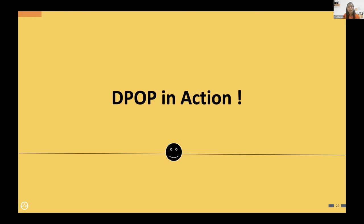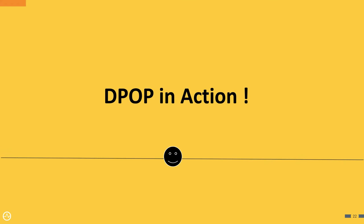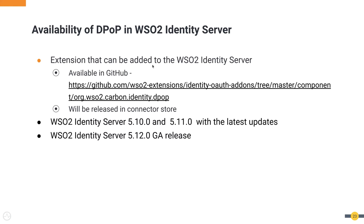I'll do a quick demonstration on how to generate a DPoP token, how to get an access token, and how to access protected resources using DPoP tokens. Before that, some quick information: DPoP is an extension for WSO2 Identity Server — it's not available out of the box but as an extension, currently available in a specific repository.